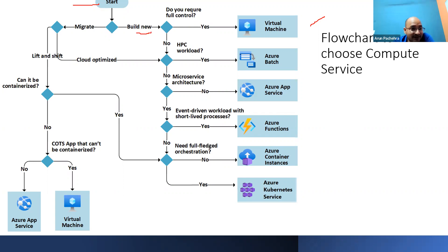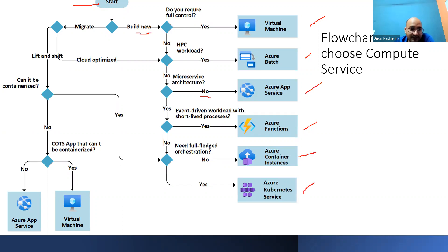If it's HPC — high-performance compute — then Azure Batch is the solution of choice. If not, and there's no microservice architecture, then Azure App Service is the right fit. If it's an event-driven workload with short-lived processes, then Azure Functions is the answer. If it's not event-driven, the next question is: do we need orchestration? If no, then ACI. If yes, then AKS. That's the workflow for a green field — a fresh deployment.